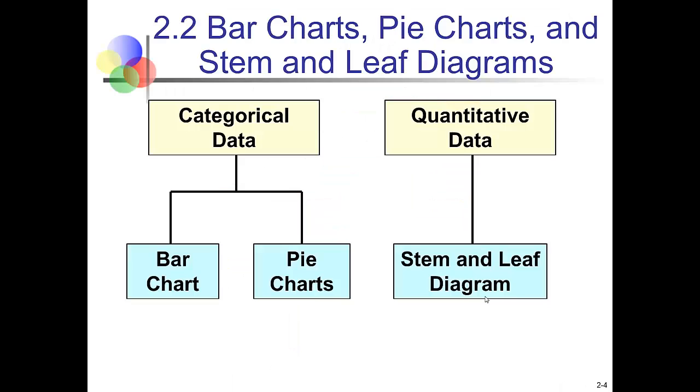So Section 2 of the book talks about bar charts, pie charts, and stem and leaf diagrams. We'll start with the charts and graphs you use to describe categorical data, bar charts and pie charts. Then we'll move on to a discussion of stem and leaf diagram, which we use to describe quantitative data.